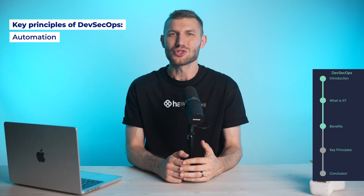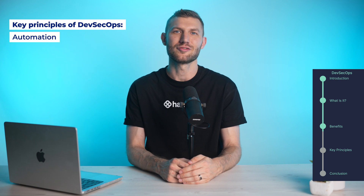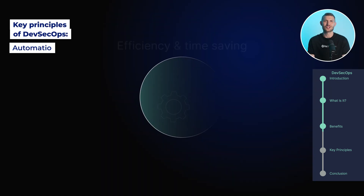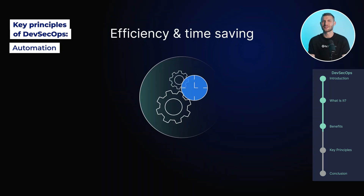Automation is crucial in DevSecOps. It enables continuous integration and delivery of secure code, automated testing for security vulnerabilities, and deployment of security patches and updates. Automation ensures that security measures are consistently applied.